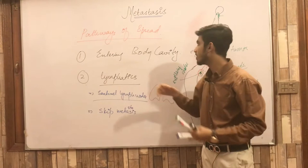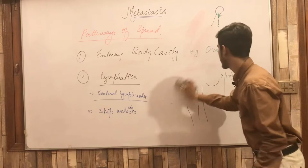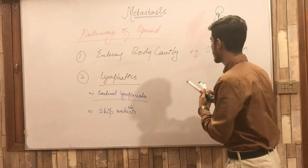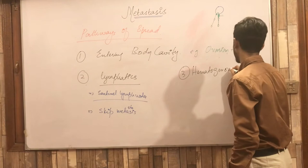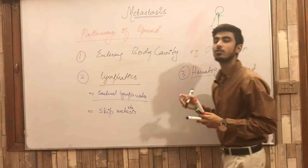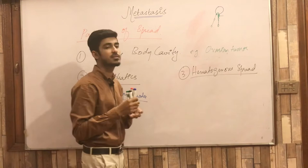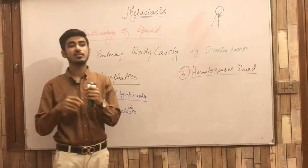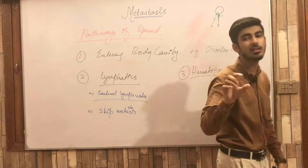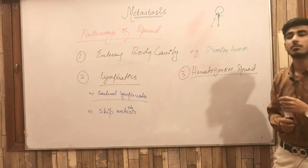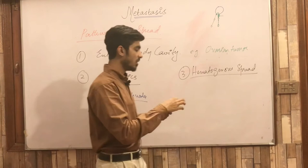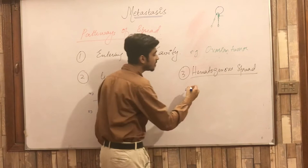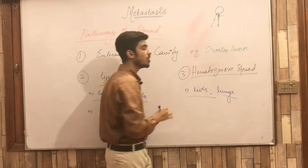The third pathway of metastasis is hematogenous spread — spread through the blood vessels. There are arterial and venous blood vessels. Because arterial vessels are thick, spread through arteries is less common. Most hematogenous spread occurs through the venous blood, and it mainly involves two organs: the liver and the lungs.